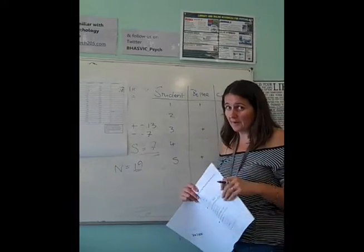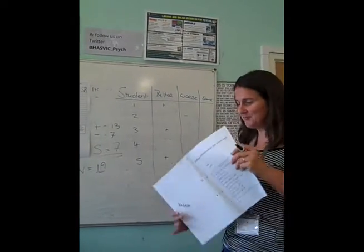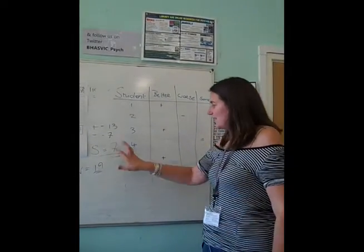So therefore, you ignore that score. So N equals 19 instead of 20. That's really, really important, okay? Are you following me? Good. And that's all that you need to do. So is it significant or not?